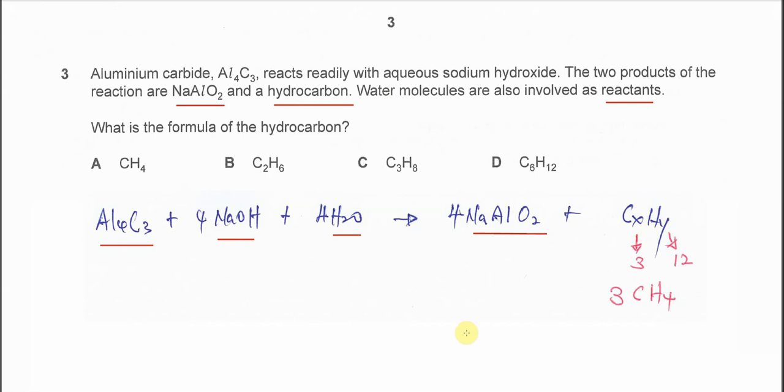First, I recommend balancing the aluminum. For aluminum on the left, the coefficient is four, so you put four here.